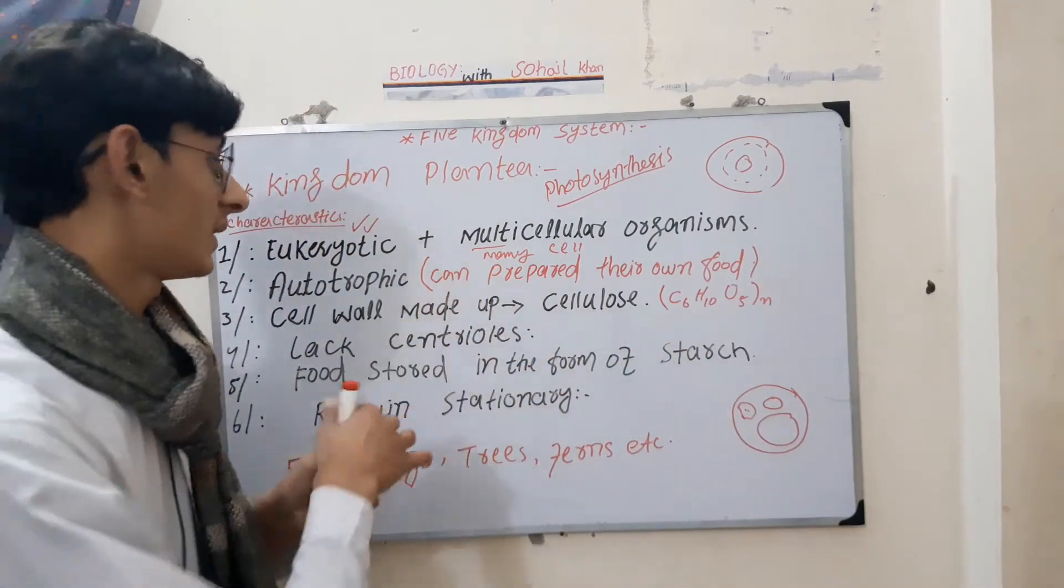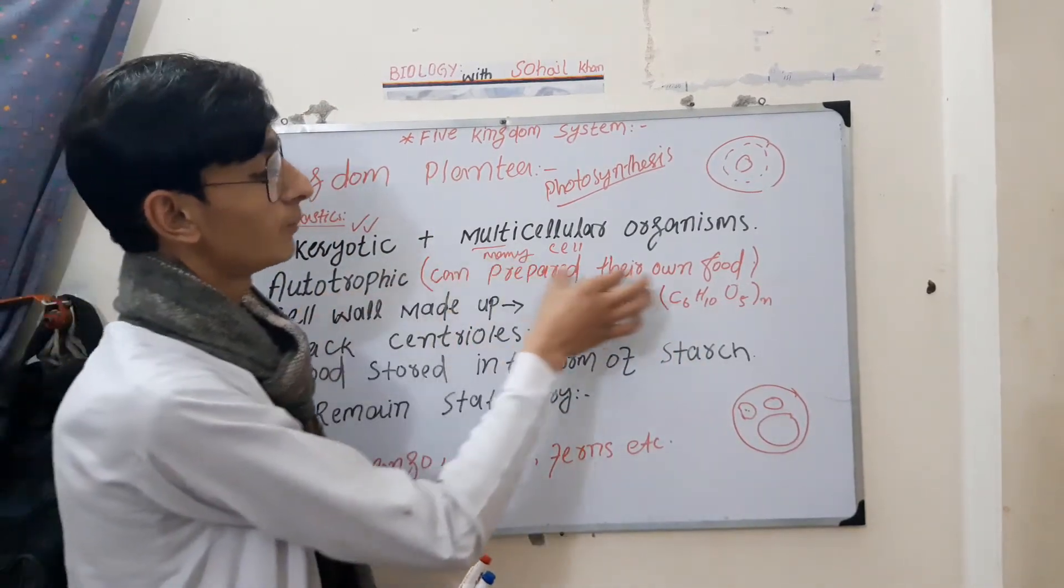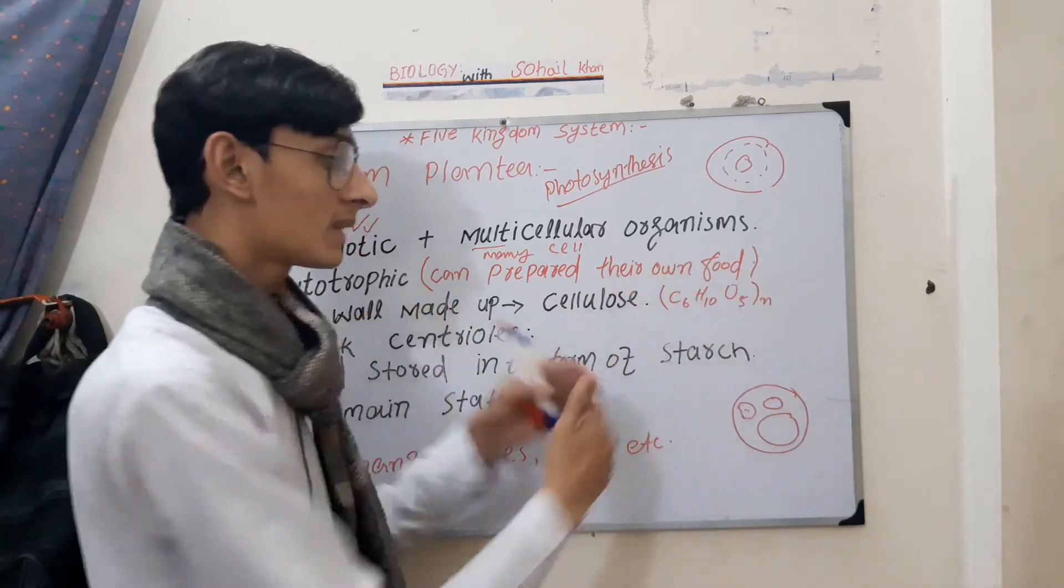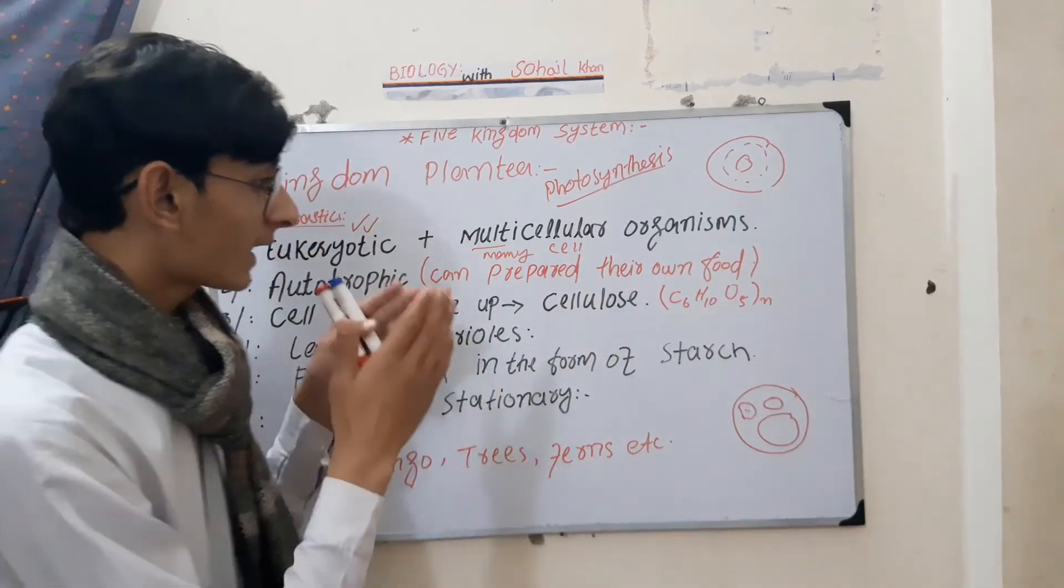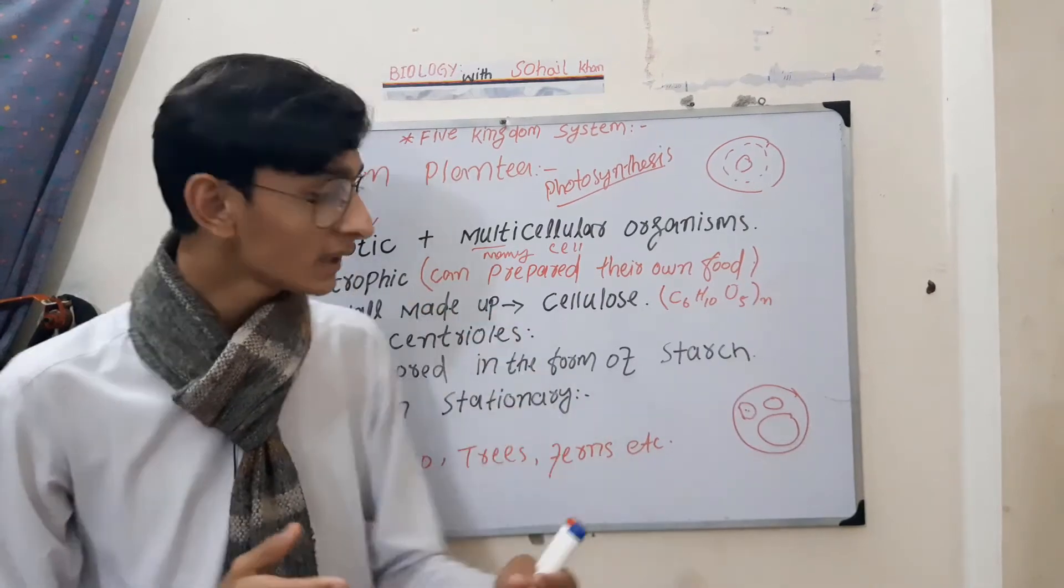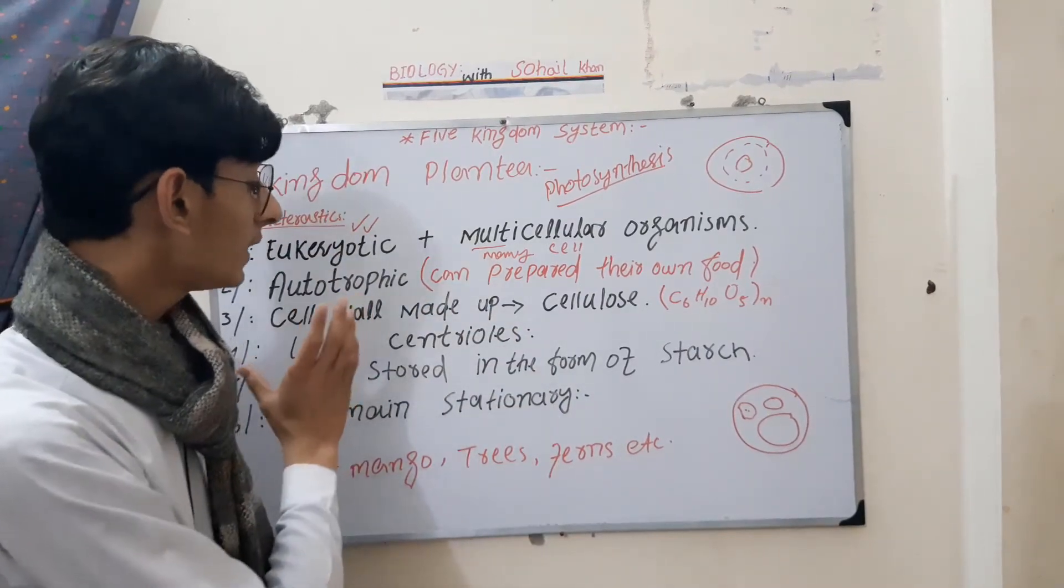They are autotrophic, meaning they make their own food by themselves. They can make food and then use that food.